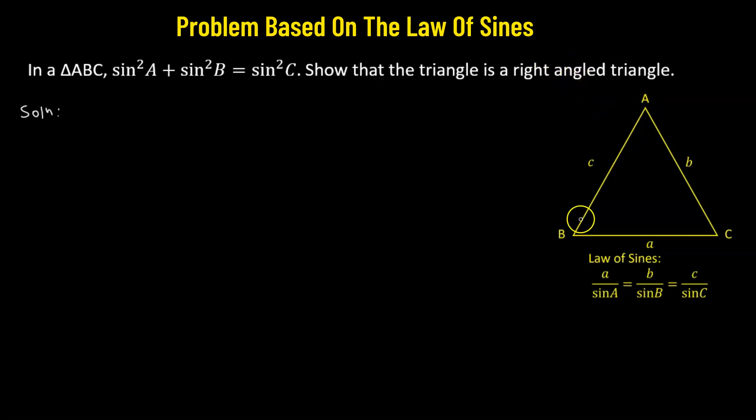We'll start by considering an acute angle triangle and state the law of sines. Now, the law of sines holds equally true for an obtuse angle triangle as well as a right-angled triangle. In this case, we're considering an acute angle triangle.